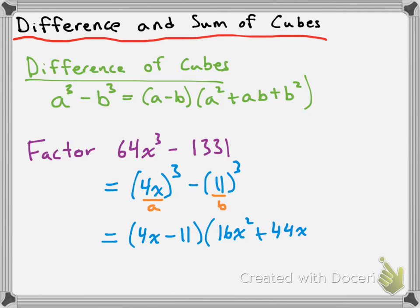And then we have plus b squared, so that's going to be plus 11 squared. And 11 squared is 121, so plus 121. So that's it fully factored. We're not able to factor this second part. It's not factorable, and it actually never will be with a difference of cubes.